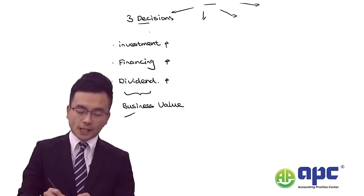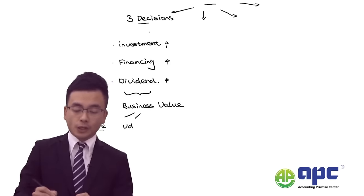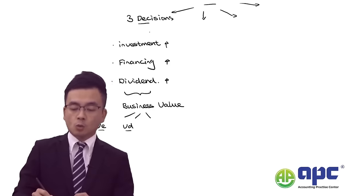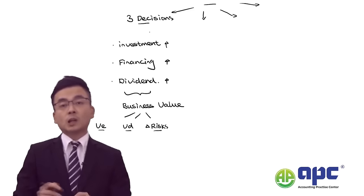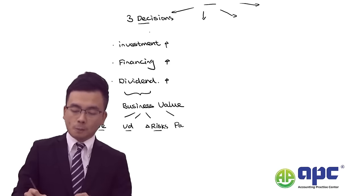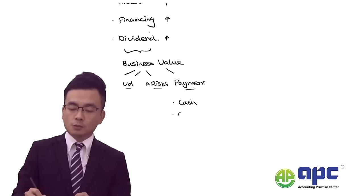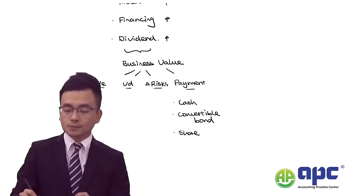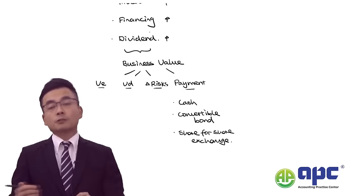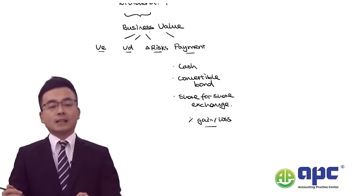In the AFM syllabus, when we talk about business valuation, we are talking about the value of equity — how we're going to determine that using the free cash flows to equity methodology — the value of debt, valuation of traded debt, and changes in risk when valuing the business. We also need to determine the payment form, which can be cash, convertible bond, or share-for-share exchange.